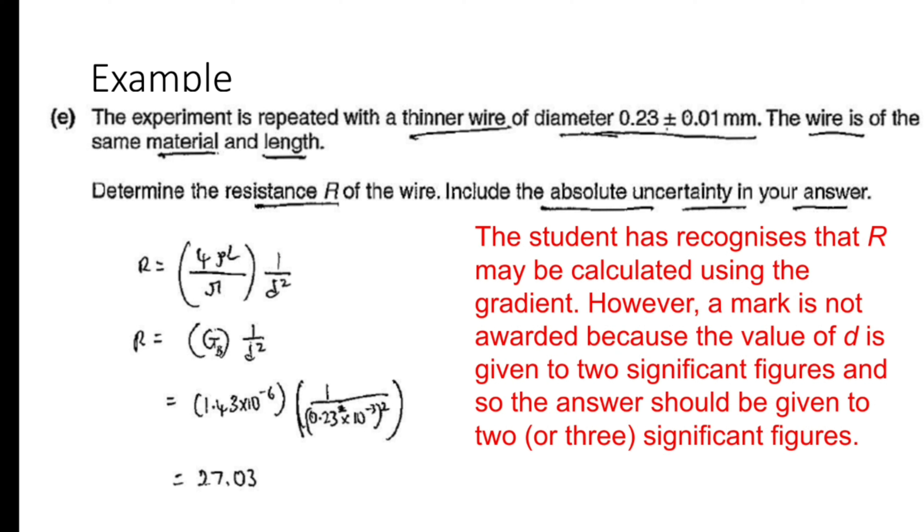So in planning paper we have to be very very careful for number of significant figures which we are using in our answer. It should always gel with the number of SF used in raw data. Raw data means values given in question.